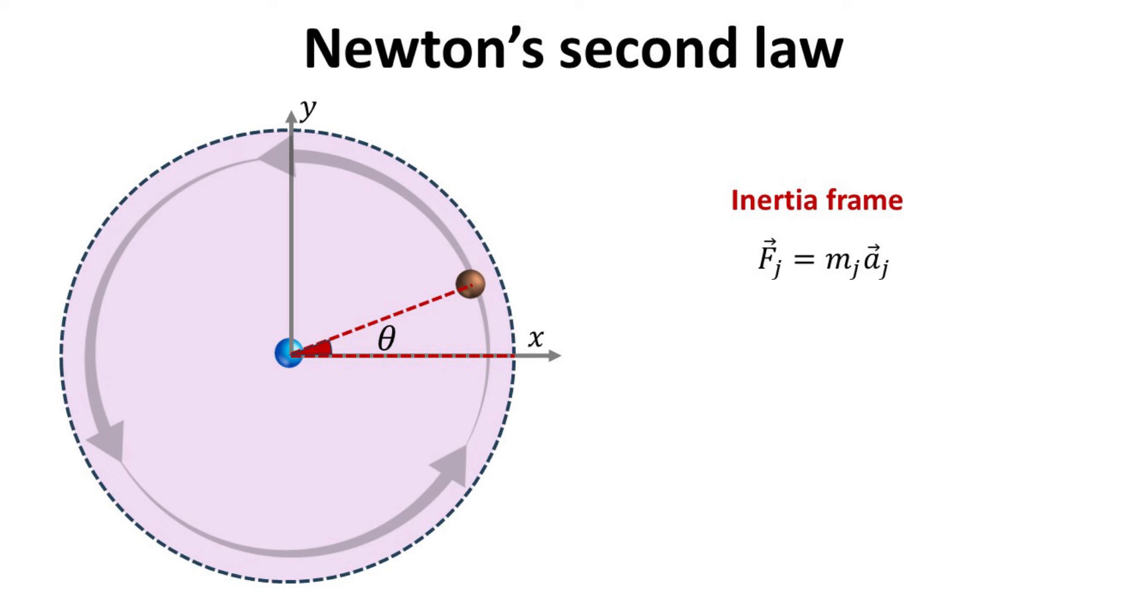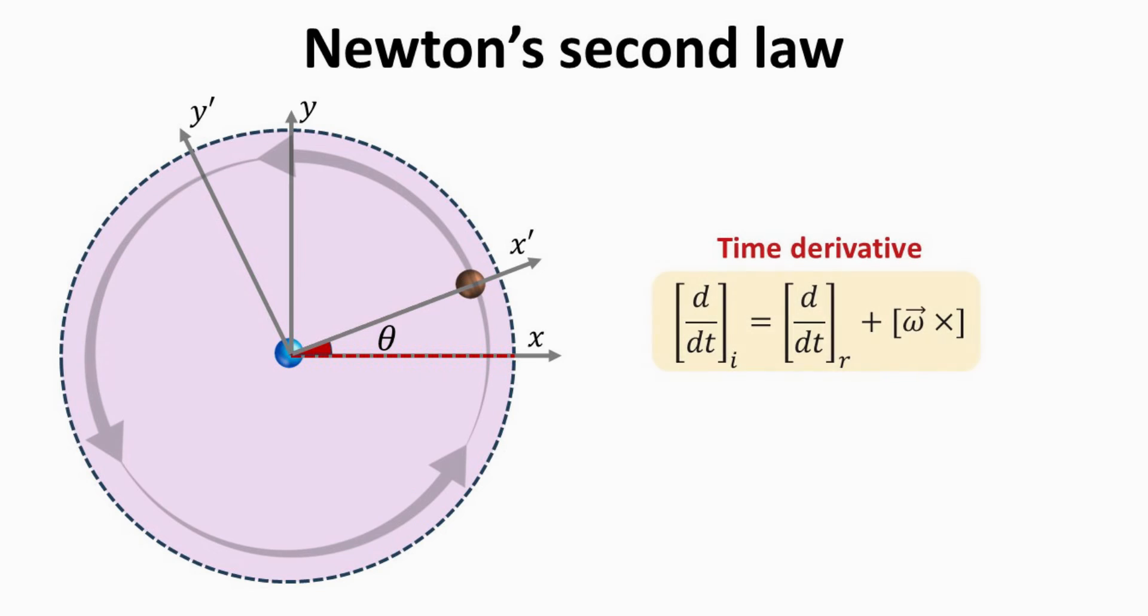Let's start with the red point mass in a rotating disk. In the inertia frame as shown, the point mass dynamics is governed by Newton's second law. It is given by force equals mass times its acceleration. Now, instead of the inertia frame, we have a frame of reference that is also rotating at the same angular frequency as the disk. What would be the equivalent Newton's second law in this new rotating frame? In this new rotating frame, the time derivative operator will take a different form as shown, which has an extra term that accounts for the base vectors rotating at angular frequency omega. The subscript I and R denotes the inertia and rotating reference frames.